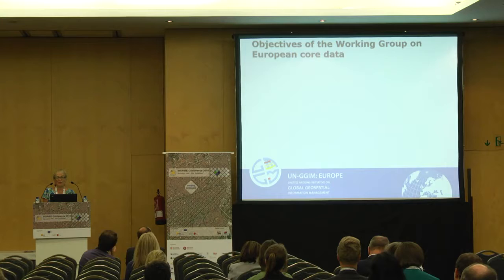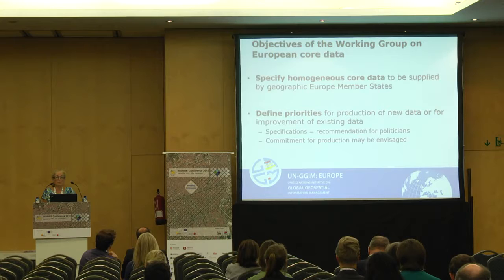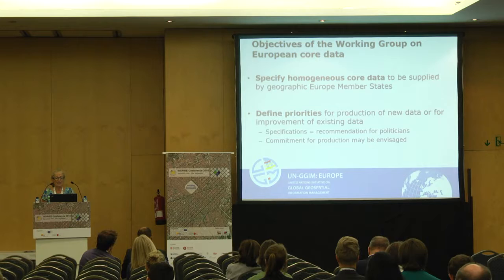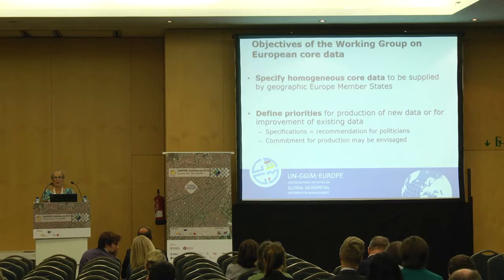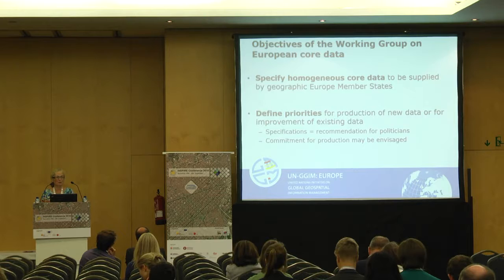So what are the objectives of the working group on European core data? We have to specify homogeneous core data that must be supplied by geographic European member states. In practice, our work is about defining priorities for the production of new data and improvement of existing data. Our specifications may be used in two ways: as recommendations for politicians planning future work, or as commitments for production between countries to move closer to a European product.